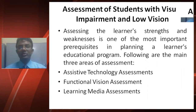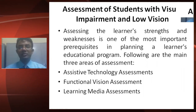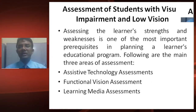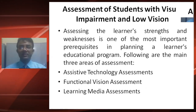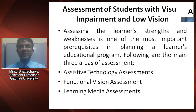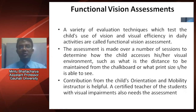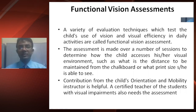Coming to the assessment of students with visual impairment and low vision, assessing the learner's strengths and weaknesses is one of the most important prerequisites in planning a learner's educational program. There are three main areas of assessment: first, assistive technology assessment; second, functional vision assessment; and third, learning media assessment.